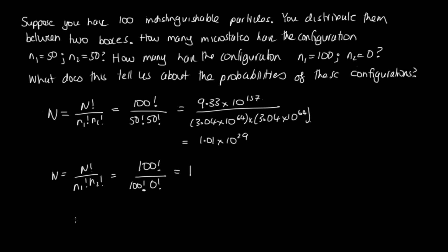This tells us it is 1.01 times 10 to the 29 times more likely to have particles distributed 50-50 than all 100 in one box. If you imagine one mole of molecules, the factorials become incomprehensibly large. It is highly, highly unlikely that all the particles would find themselves on one half of a room — in fact, in the lifetime of our universe it's unlikely we'd ever observe that state.